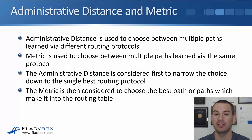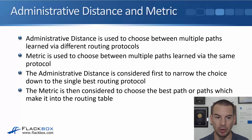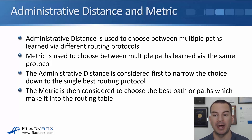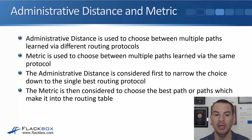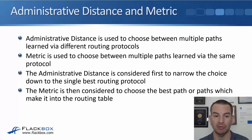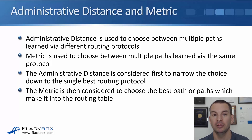Administrative distance is used to choose between multiple paths learned via different routing protocols. Metric is used to choose between multiple paths learned with the same routing protocol. The administrative distance is considered first to narrow the choice down to the single best routing protocol, and then the metric is considered to choose the best path, which will make it into the routing table.